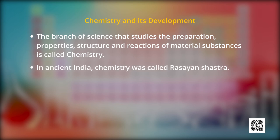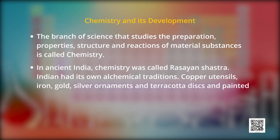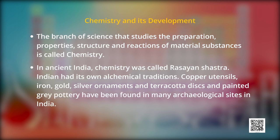Dear children, in ancient India, chemistry was called Rasayan Shastra, Ras Tantra, Ras Kriya, or Ras Vidya. It included metallurgy, medicines, manufacture of cosmetics, glass, dyes, etc. India had its own alchemical traditions. Copper utensils, iron, gold, silver ornaments, and painted grey pottery have been found in many archaeological sites in India.